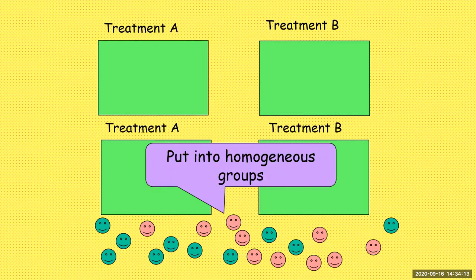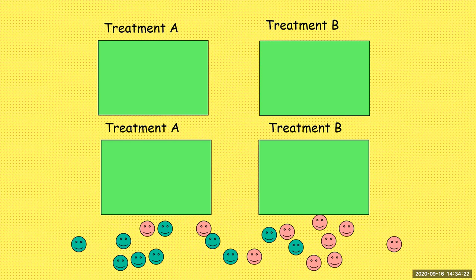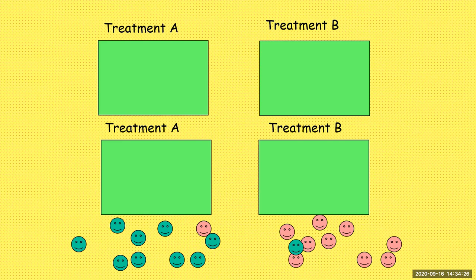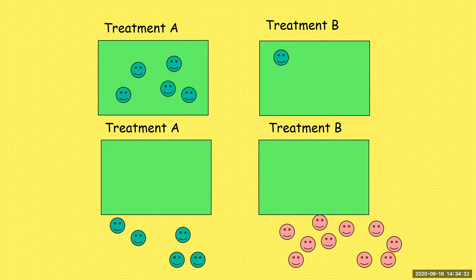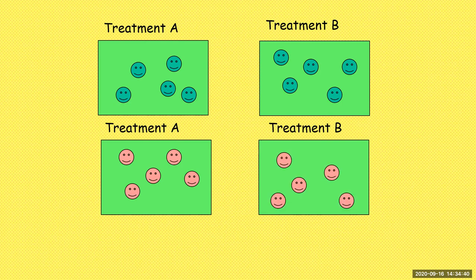To give you a visual of what a randomized block is: first, you put units into homogeneous groups, and then you randomly assign treatments — half get treatment A, half get treatment B. Notice in our two groups, half of each group gets treatment A and half gets treatment B.